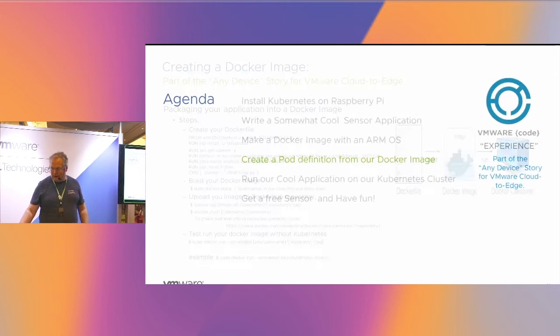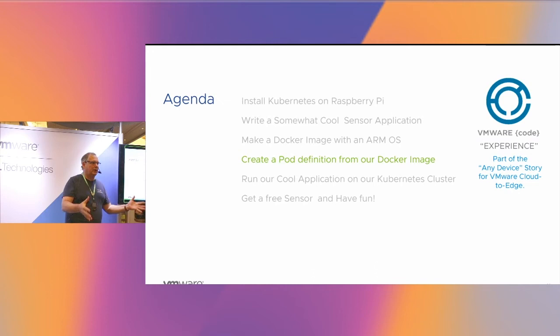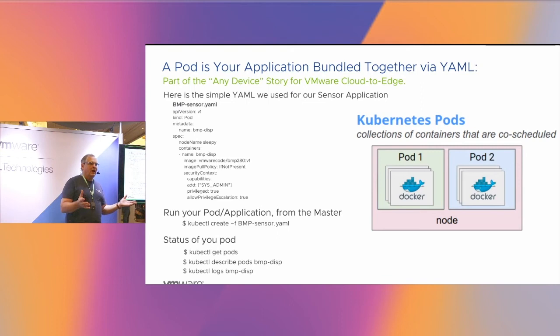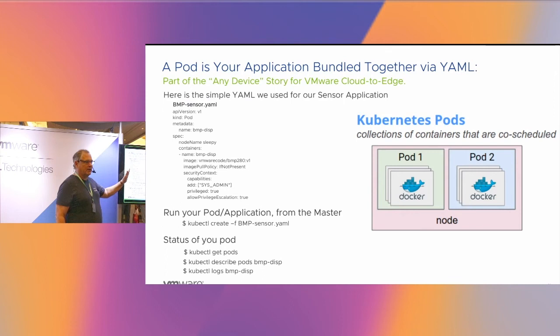Now you actually want to build a Kubernetes pod. A Kubernetes pod is a term for your application — you define your application criteria and what machines you want it to run on. This is the YAML file. You could take a semester class on Kubernetes YAML parameters; it's fairly complicated, but this is a very simple one with key-value pairs. Tabs make a difference, spacing makes a difference, columns make a difference. It is very column-specific, so just understand that.